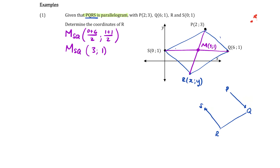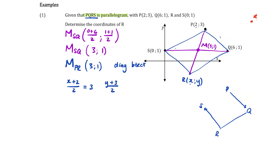That helps us because the diagonals of a parallelogram bisect each other, so M is the midpoint of PR as well — also (3, 1). So: x plus 2 divided by 2 equals 3, and y plus 3 divided by 2 equals 1. Solving: x plus 2 equals 6, so x equals 4; y plus 3 equals 2, so y equals negative 1.